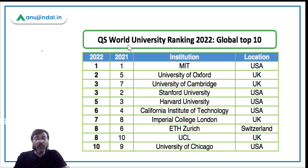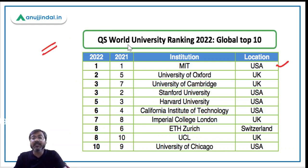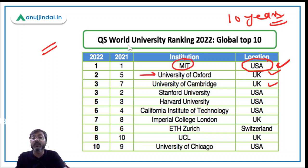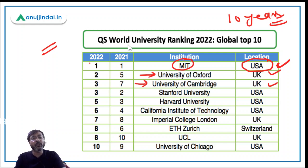Talking about the 2022 rankings, it is once again MIT at number one, and it has been at number one for the last 10 years. Number two is the University of Oxford from the UK, and number three is the University of Cambridge, also from the UK. Remember the top three: MIT, University of Oxford, and University of Cambridge.